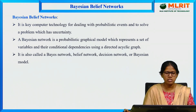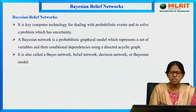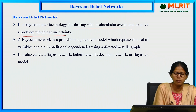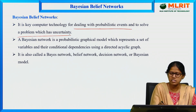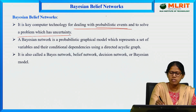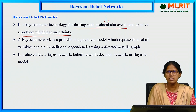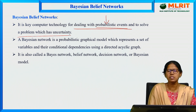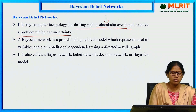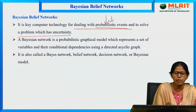In the introduction, we will see why Bayesian belief networks are required and what is their usage. Bayesian belief networks deal with probabilistic events and solve problems that have uncertainty. In real world scenarios, maximum applications use probability distribution. For example, looking at the weather, you can say there is a 90 percent chance of rain falling, and 10 percent chance it will not rain.